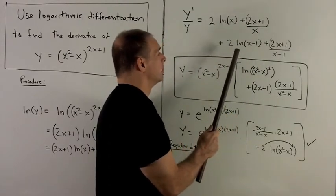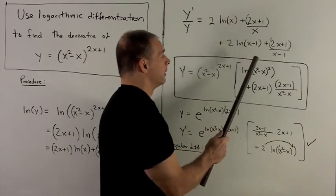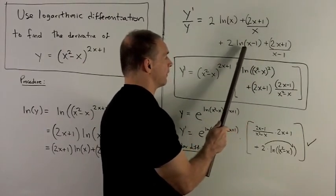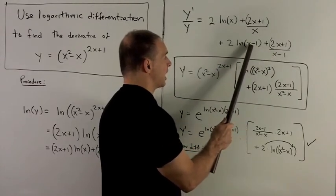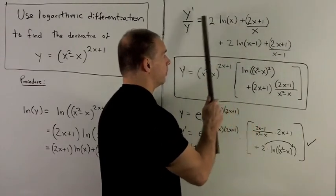Plus derivative of the first in the second product rule, which is going to be just a 2, times natural log of x minus 1, plus the first times the derivative of the natural log of x minus 1. So we put that in the bottom, take the derivative of the inside, which is just a 1, so we wind up with all of this.